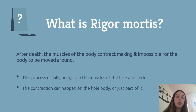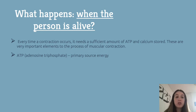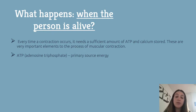It happens due to chemical changes in our body. When a person is alive, every time a contraction occurs it needs a sufficient amount of ATP, or adenosine triphosphate, and calcium stored in a muscle. These are two important elements to the process of muscular contraction, and ATP, being our primary source of energy, is also important not only to contraction but also to the elasticity of the muscle.